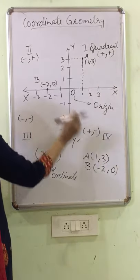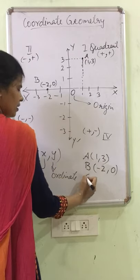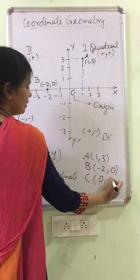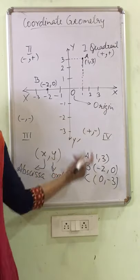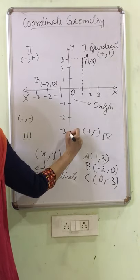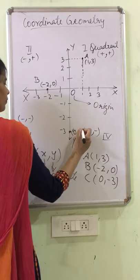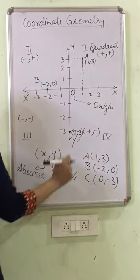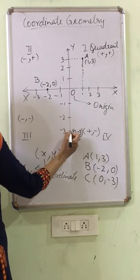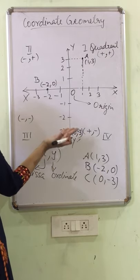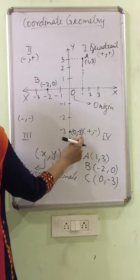If I am taking other point, 0, minus 3, it means x is 0 but y is minus 3. And y minus 3 is here. So I will plot 0, minus 3. It means on y-axis, x-coordinate is always 0 and y is minus 3. Why this is 0, minus 3? Because we are not moving left or right. We are sticking to this point. So this is 0, minus 3.